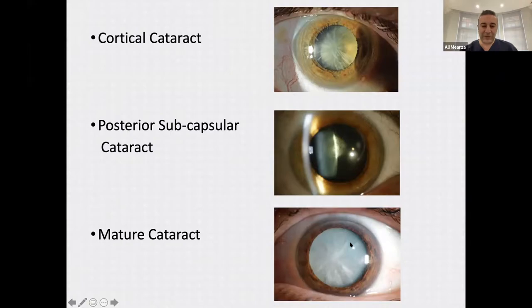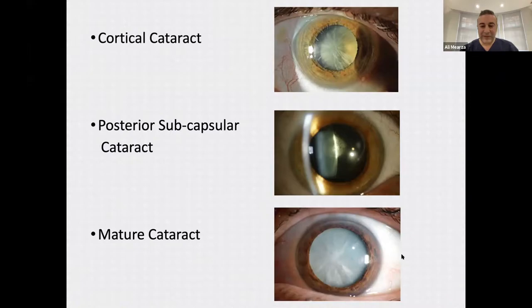This is what a mature cataract looks like — it's a white cataract, sometimes visible through the pupil, and becomes very apparent when the pupil is dilated. In this type of cataract, vision is often at the level of count fingers or hand movements.